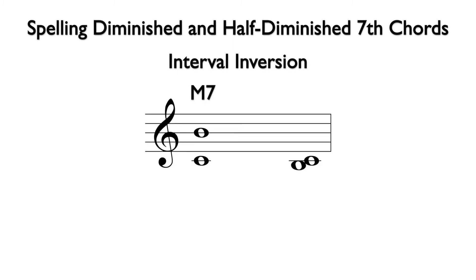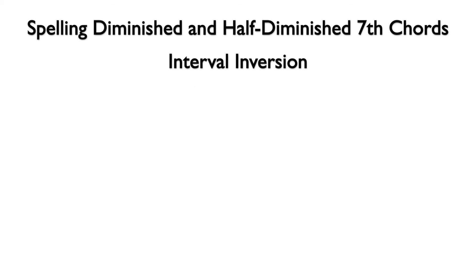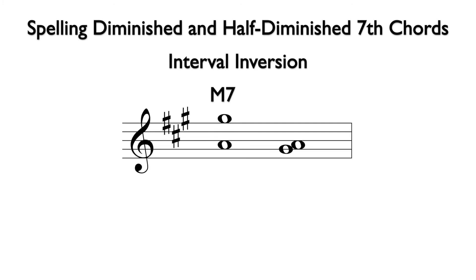Major 7ths invert to minor 2nds. So if we bring the B in this interval down an octave, we see that this is a minor 2nd. We see the same thing with the major 7th from A to G sharp — when the interval is inverted, we have a minor 2nd from G sharp to A.